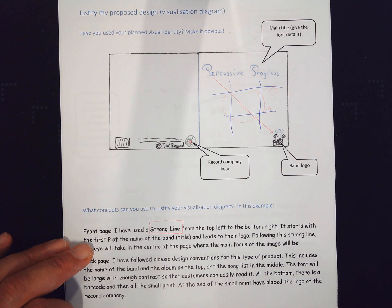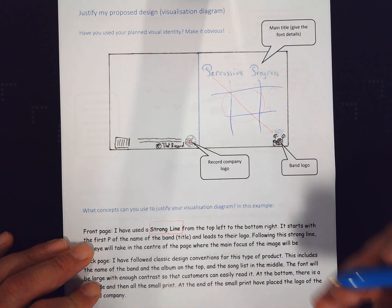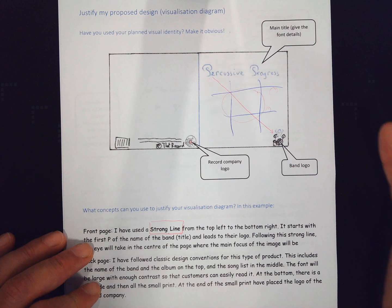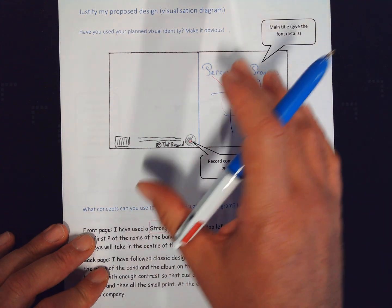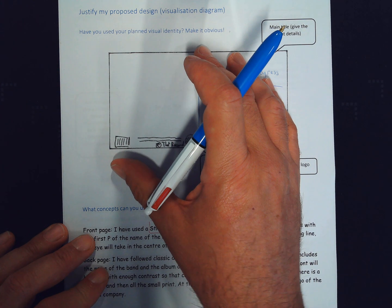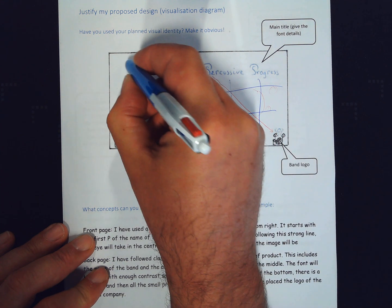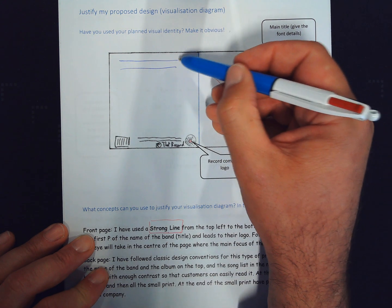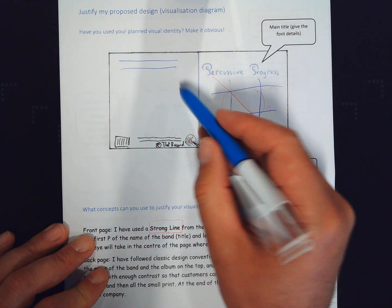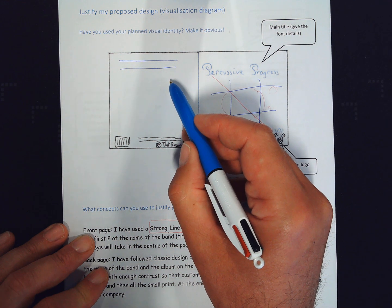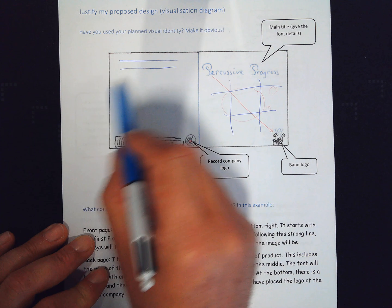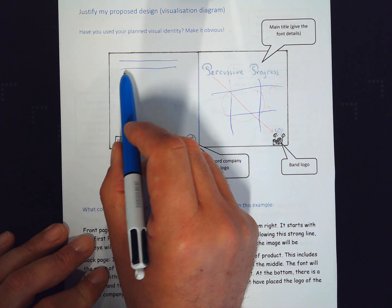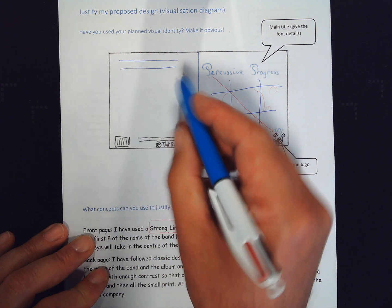For the back page, I'm going to justify it by saying that I'm following conventions. Maybe the band isn't very well known, so they will want to put all the information the audience expects on the back page. So you start with the main title and that will be big enough and with contrasting enough font so that you can read all the information easily. So Percussive Progress will be here. Progress, sorry. And then Fifth Planets from the Left.